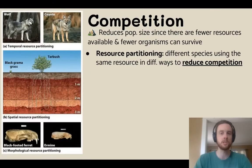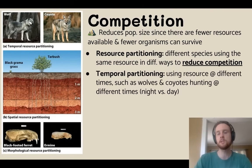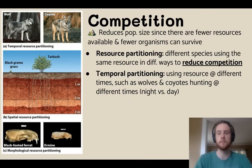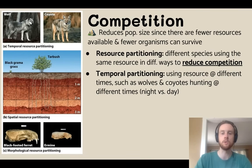There are three types of resource partitioning. The first is called temporal partitioning, where organisms that compete for a shared resource use that resource at slightly different times to avoid direct competition. Here we have the wolf and the coyote — they both hunt for small mammals, but they do so at different times of day so that they avoid directly competing for the same hunting territory.